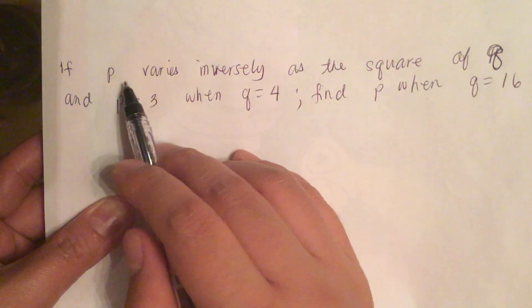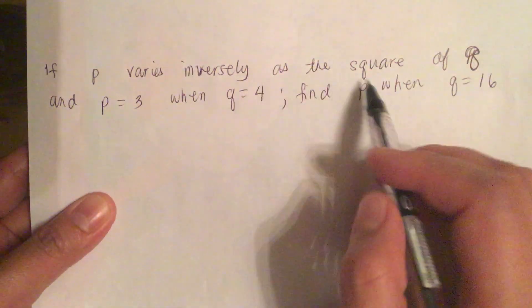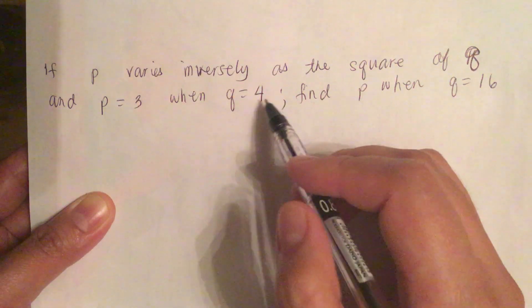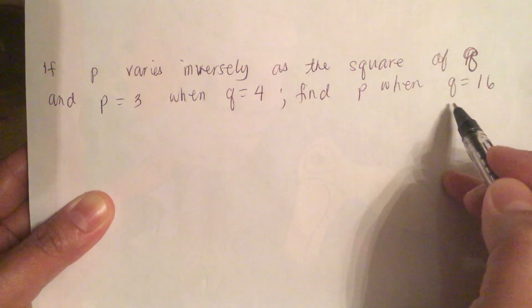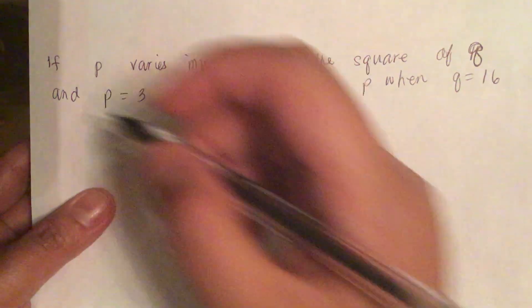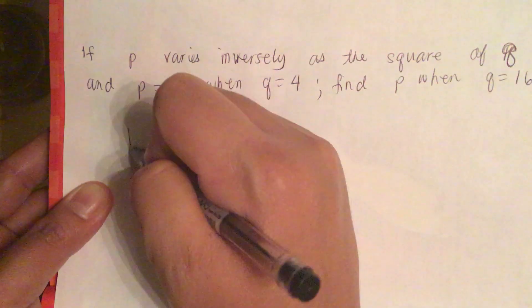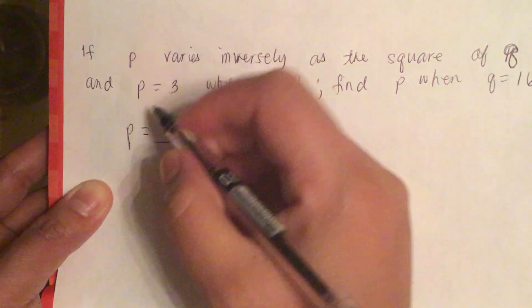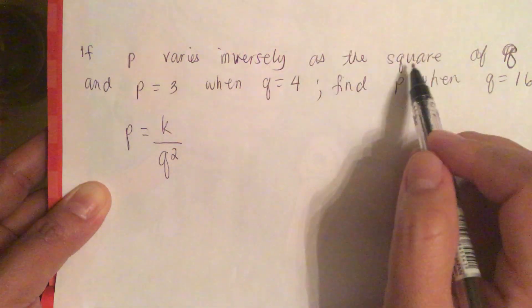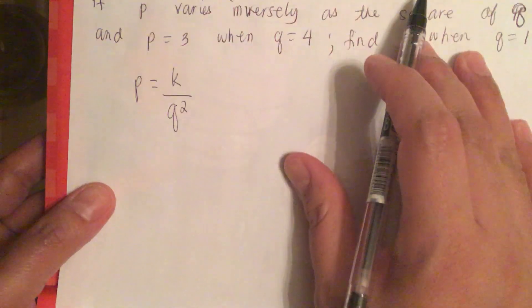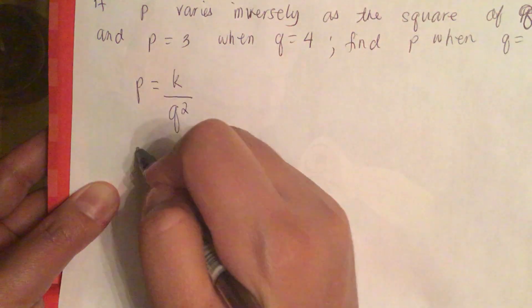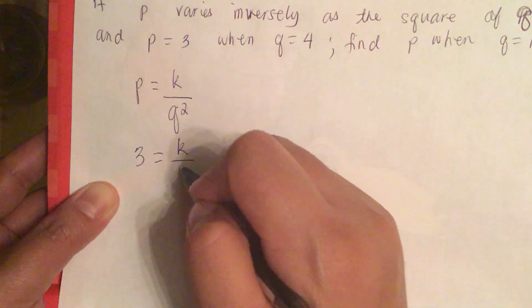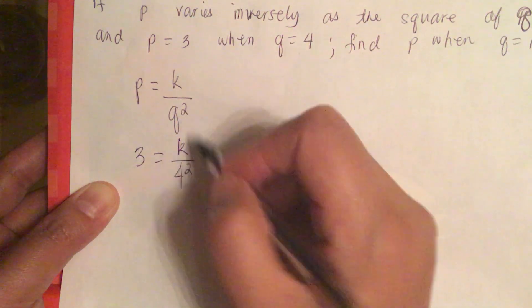If p varies inversely as the square of q and p equals 3 when q is equal to 4, find p when q is equal to 16. So the formula is going to be p is equal to k over q squared because this is the square of q. So p is equal to 3 is equal to k over q which is 4 and this is squared.